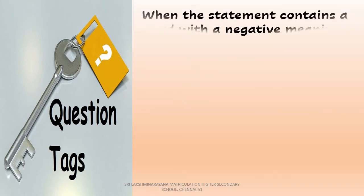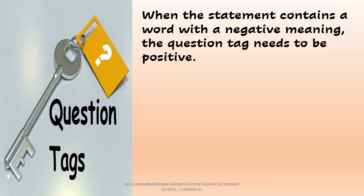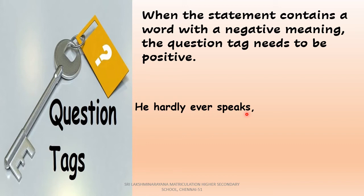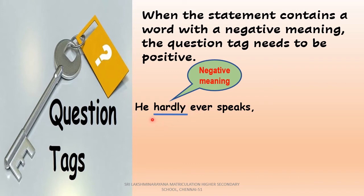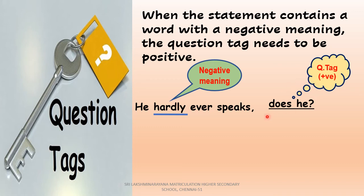Next rule: when the statement contains a word with a negative meaning, the question tag needs to be a positive one. Observe this example: 'He hardly ever speaks.' The word 'hardly' gives a negative meaning — he will not speak much. As the sentence is negative in meaning, the question tag should be positive. The question tag is 'does he?' The sentence has no auxiliary verb, so check the main verb — 'speaks,' in simple present tense. The subject is singular, so we use 'does' followed by the subject pronoun 'he.'